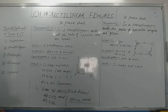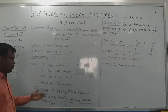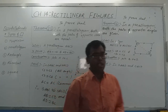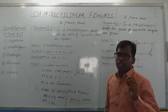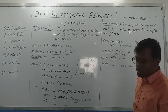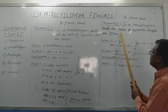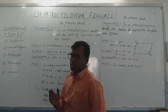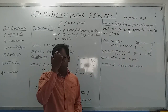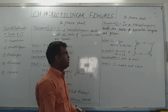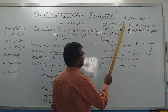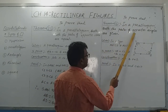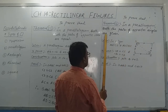This concept is from the congruency of triangles. Now the next theorem is theorem number 12, which is the converse of theorem number 11. To prove that in a parallelogram, both pairs of opposite angles are equal.